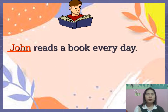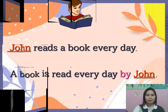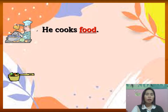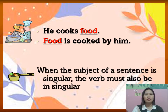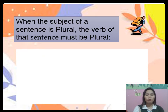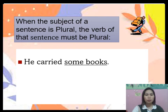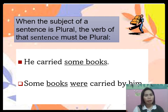Example two: 'John reads a book every day' becomes 'A book is read every day by John.' Next: 'He cooks food' becomes 'Food is cooked by him.' When the subject of a sentence is plural, the verb must also be plural. For example: 'He carried some books' — 'Some books were carried by him.' Since 'some books' is now the subject in passive, we use 'were carried.'